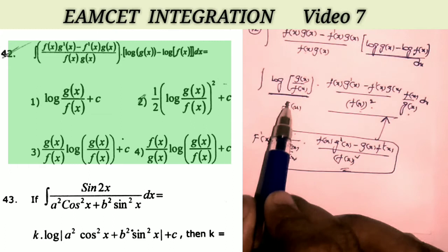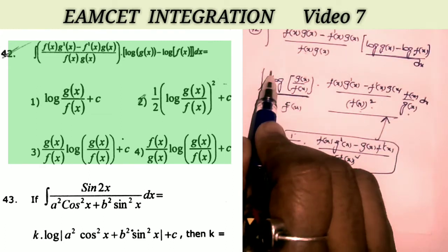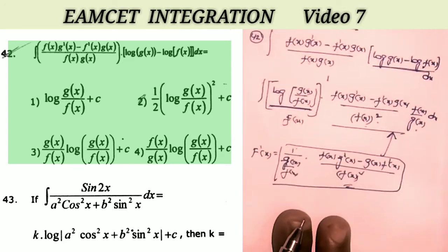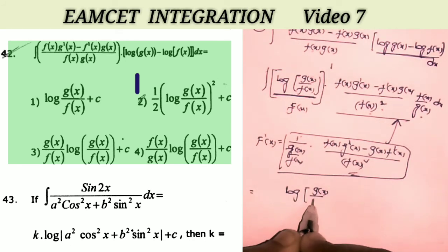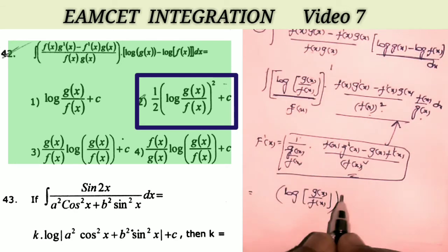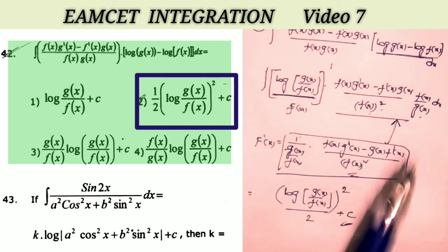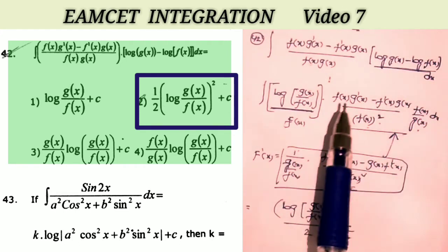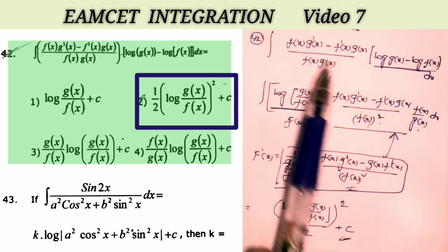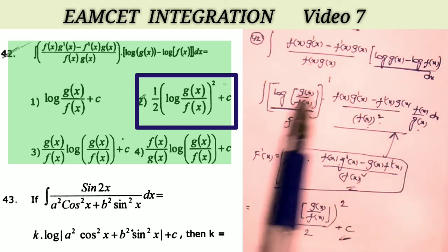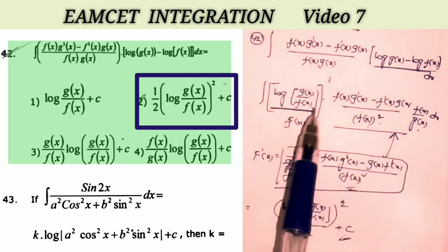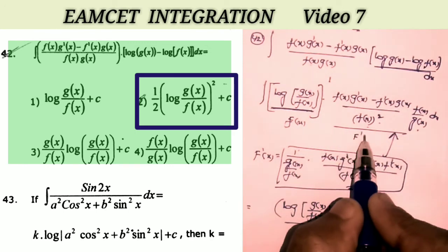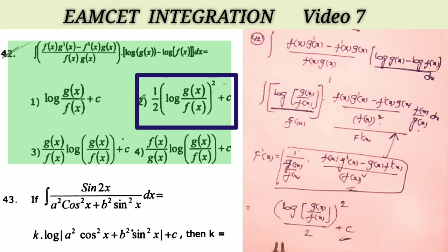Clearly this is in the form f(x)^n · f'(x) with n = 1. Applying the formula f(x)^(n+1)/(n+1), the answer is log(g(x)/f(x)) whole square / 2 + c. Applying the formula: first use log a − log b = log(a/b), convert the denominator to f(x)² · (f(x)/g(x)), take F(x) = log(g(x)/f(x)) and differentiate. With n = 1, the answer is [log(g(x)/f(x))]² / 2 + c. That is the second option.